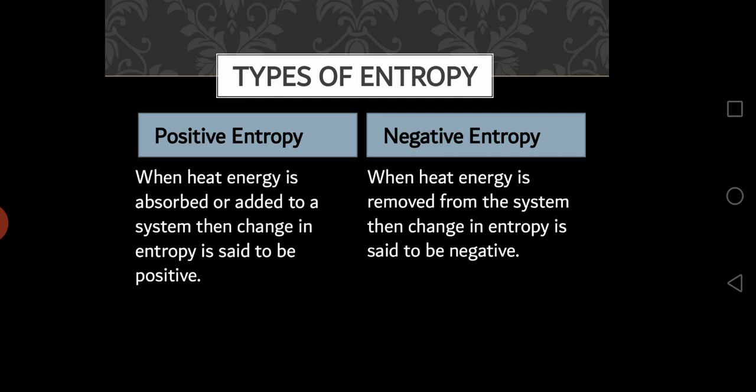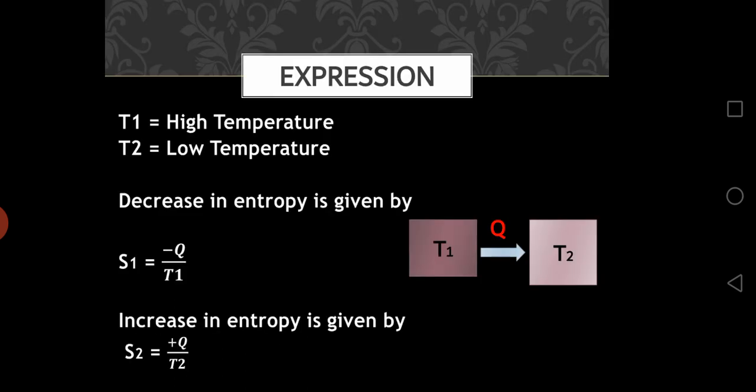Now let's go for a slight expression. If you can see the figure, there are two systems T1 and T2. T1 is the temperature of system 1 and T2 is the temperature of system 2. Let's consider that T1 is a high temperature reservoir while T2 is a low temperature system, and Q is the heat transferred from T1 to T2.